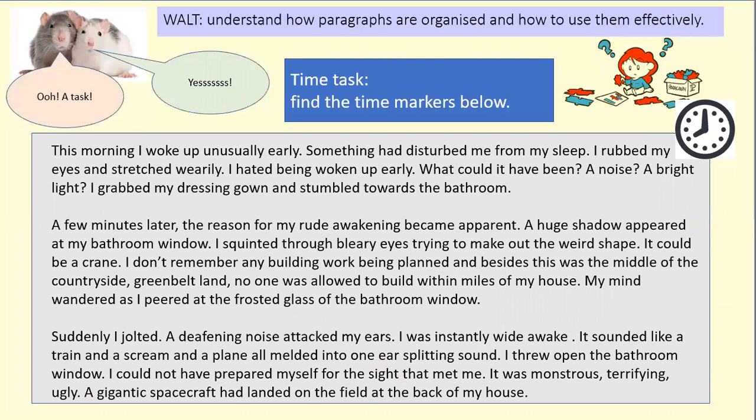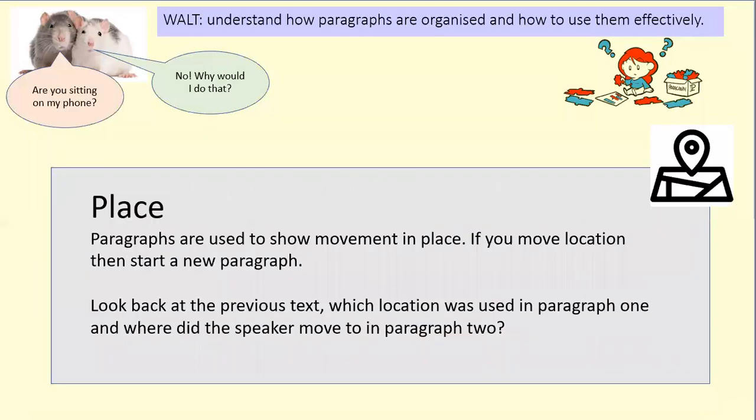What could it have been — a noise, a bright light? I grabbed my dressing gown and stumbled towards the bathroom. A few minutes later the reason for my rude awakening became apparent — a huge shadow appeared at my bathroom window. I squinted through bleary eyes trying to make out the weird shape. Could be a crane? I don't remember any building work being planned, and besides, this was the middle of the countryside. Suddenly I jolted — a deafening noise attacked my ears; it sounded like a train and a scream and a plane all melded into one ear-splitting sound. Through the open bathroom window — I could not have prepared myself for the sight that met me. It was monstrous, terrifying, ugly. A gigantic spacecraft had landed on the field at the back of my house.